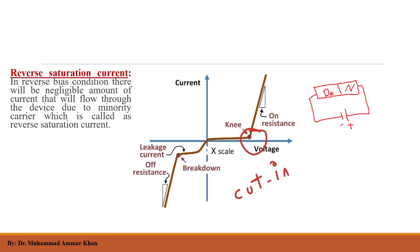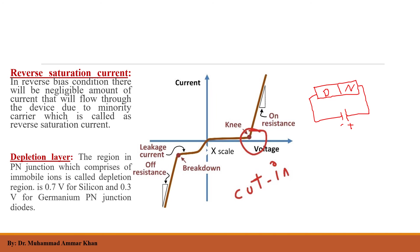In P-type material, holes are the majority carriers, but after junction formation some electrons also appear. In N-type material, electrons are the majority carriers, and after formation some holes also appear. When we connect the N-side to the positive terminal and the P-side to the negative terminal, current still flows due to minority charge carriers — this is called the reverse saturation current.